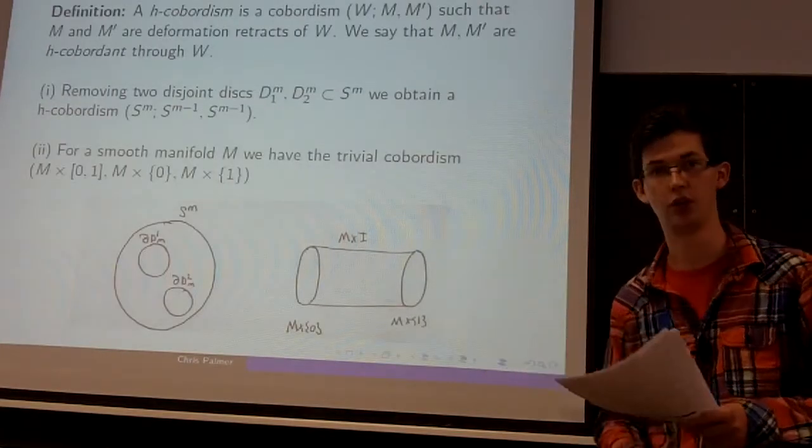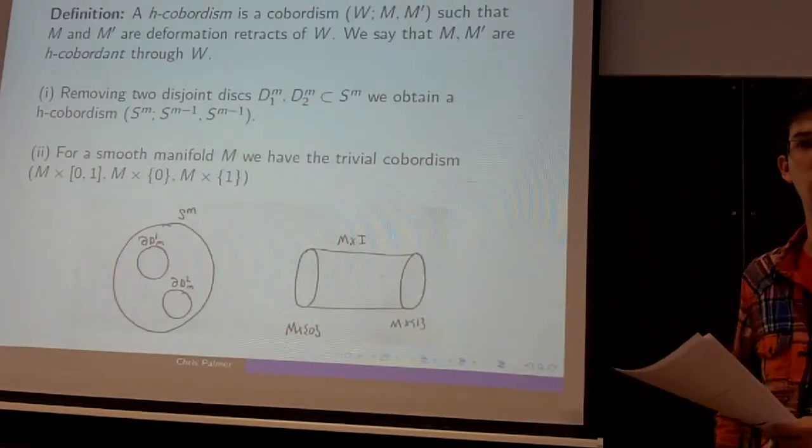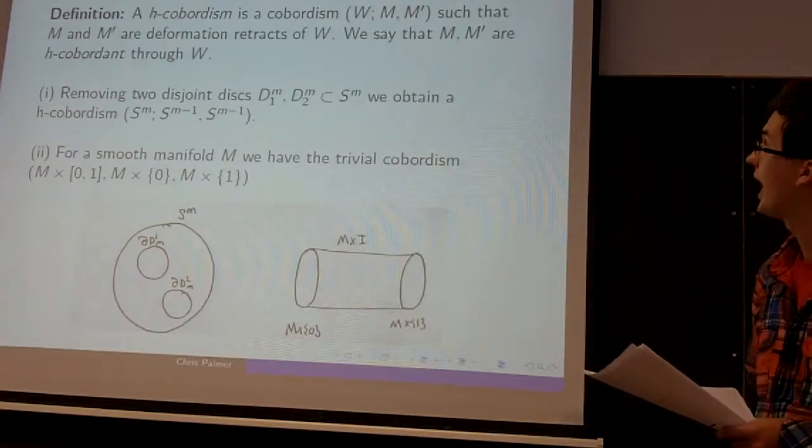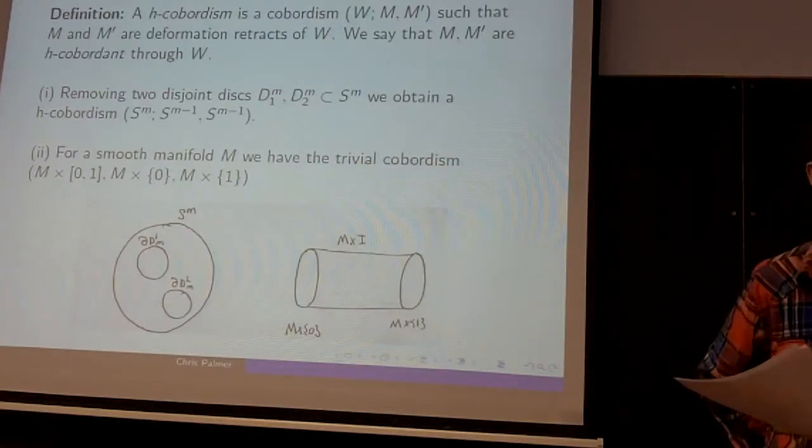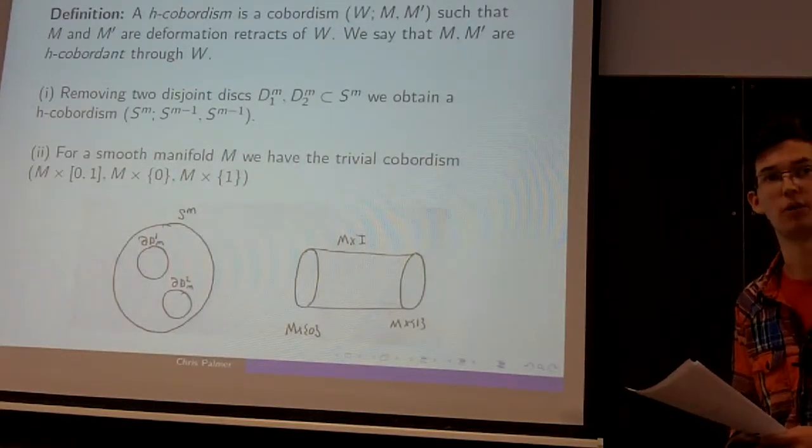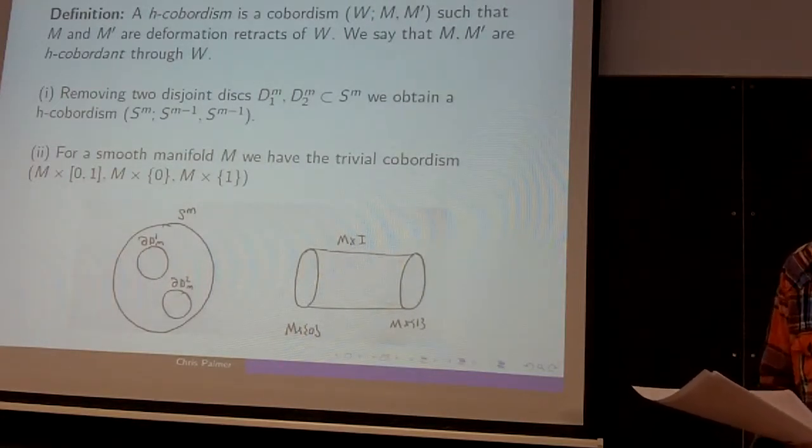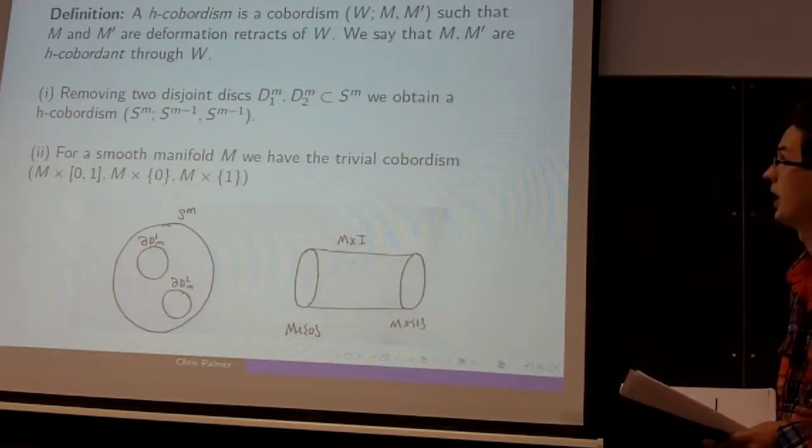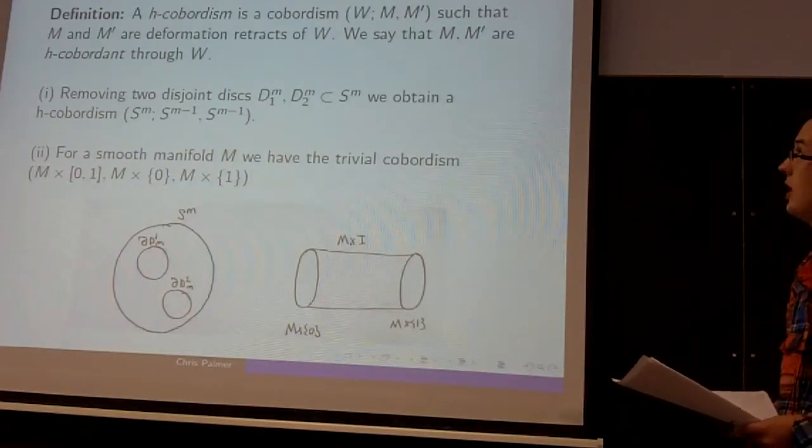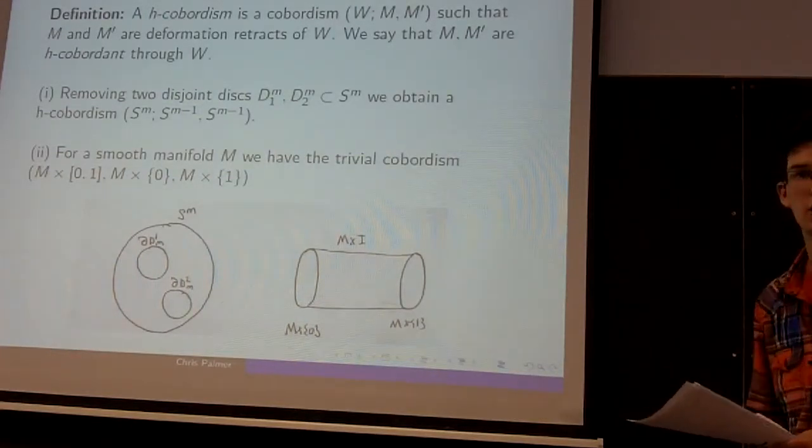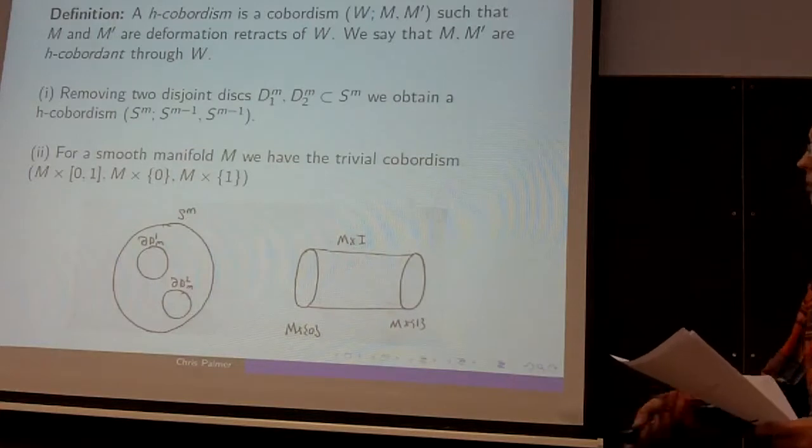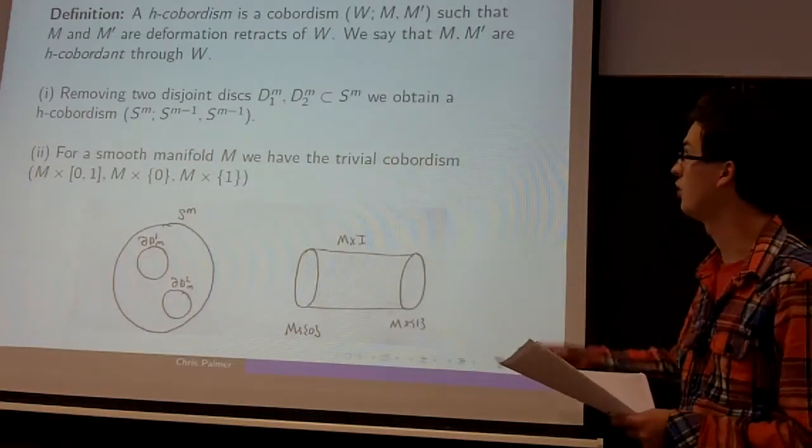There's a special notion of a cobordism called a H-cobordism, where the inclusions of M and M' into W are in fact homotopy equivalences, which is equivalent to saying that their deformation retracts. And we say in this case that M and M' are H-cobordant through this ambient manifold W.